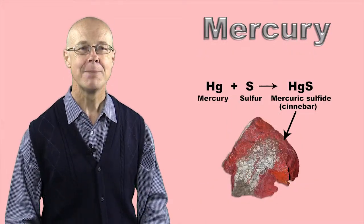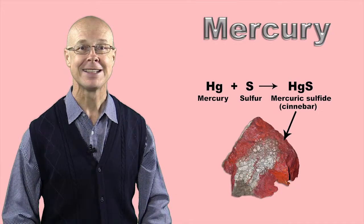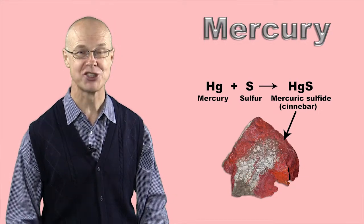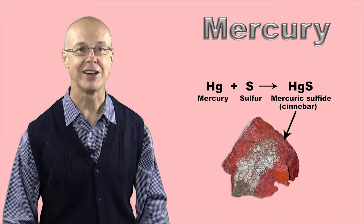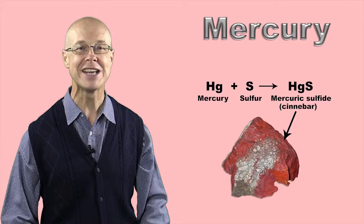In nature, mercury mostly exists as chemical compounds with other elements. The most common of these is mercuric sulphide, which is a red colored compound also known as cinnabar.